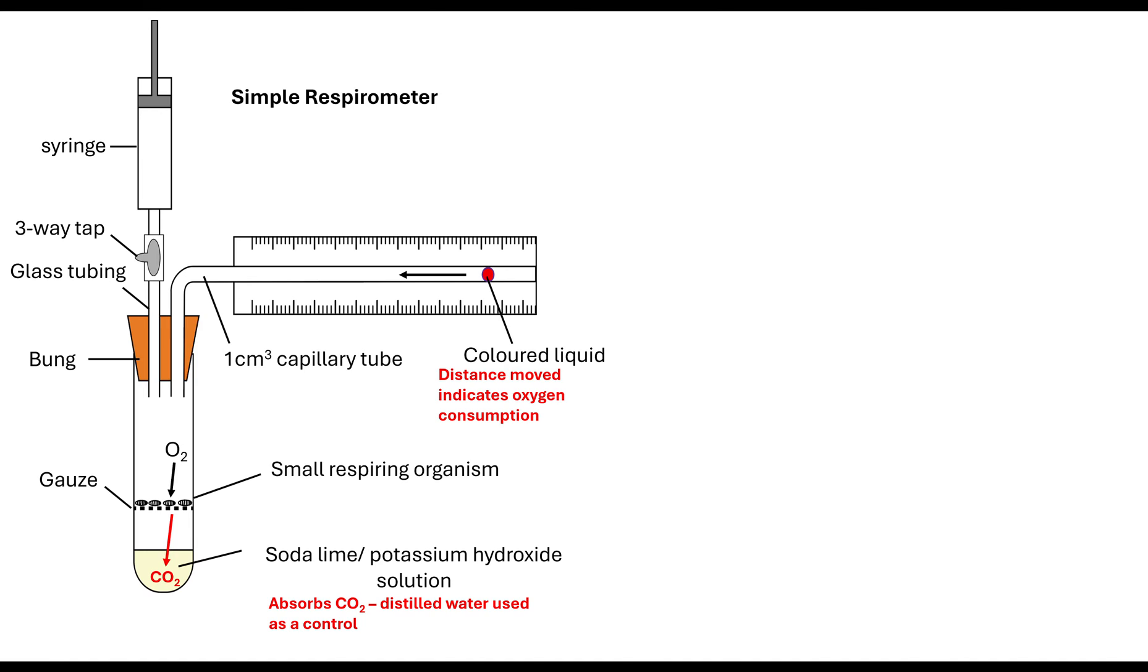And we can measure how far that has moved, the distance that it's moved, along with the diameter of the capillary tube, in this case it's one centimetre cubed, to figure out the volume of gas that has been consumed. And we can do that to figure out the gas that has been produced with carbon dioxide. So if we're trying to work out oxygen consumption, we would be looking at the movement of the liquid to the left. Now we would always want to, in any investigation, repeat this.